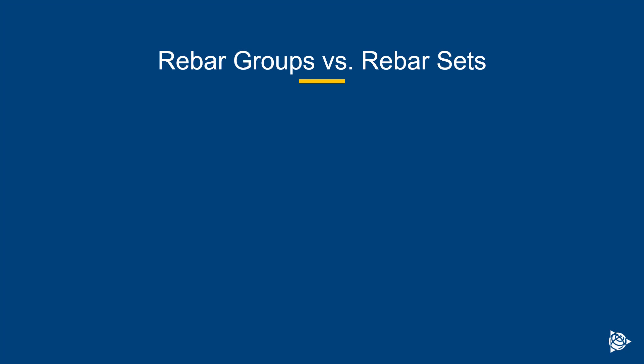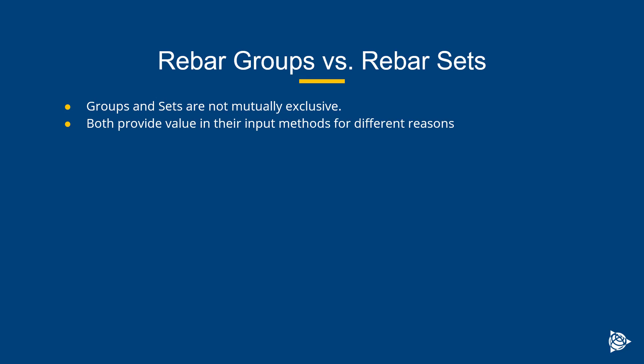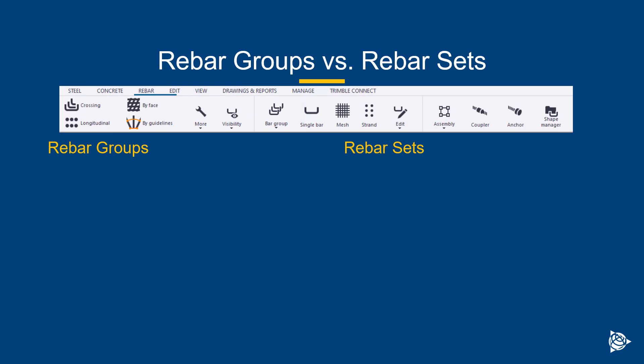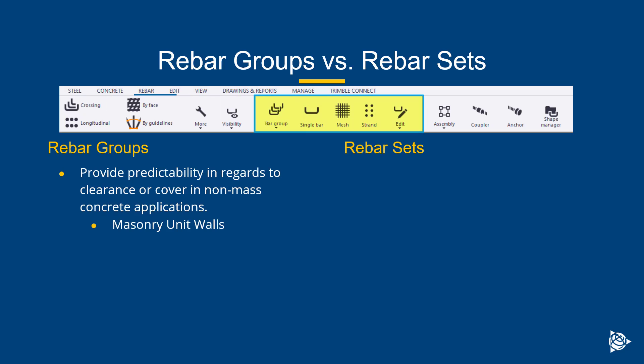The first thing we need to understand is that rebar groups and rebar sets are not mutually exclusive — you can use them in combination in your models. They both have value in their input methods for different reasons when detailing rebar. For rebar groups, they provide predictability in how we control clear cover or clearances in non-mass concrete applications.